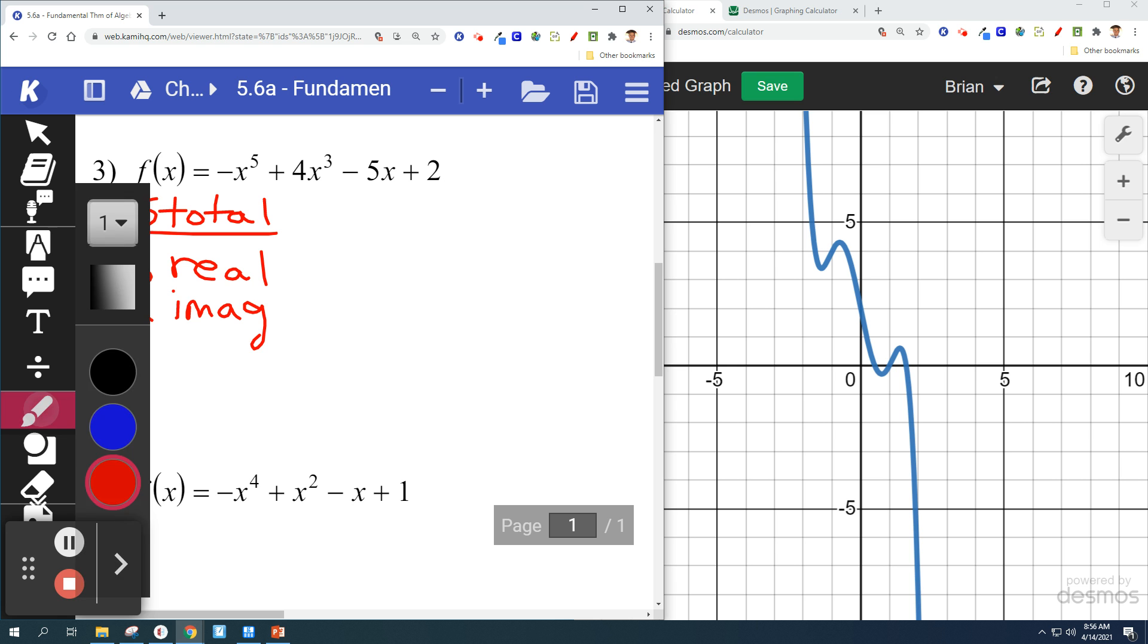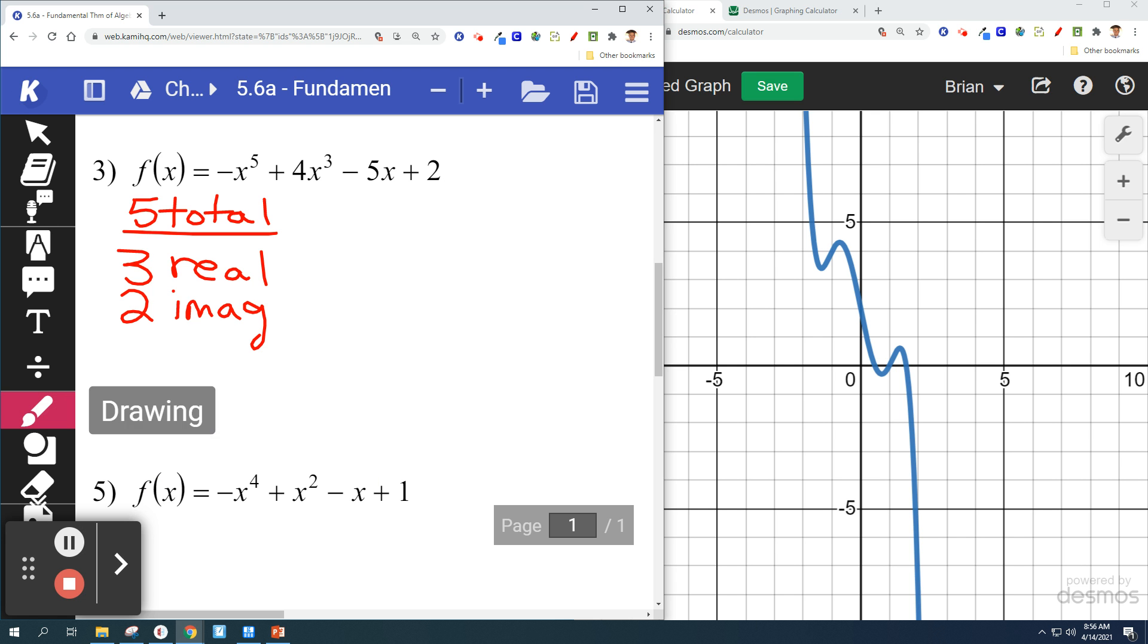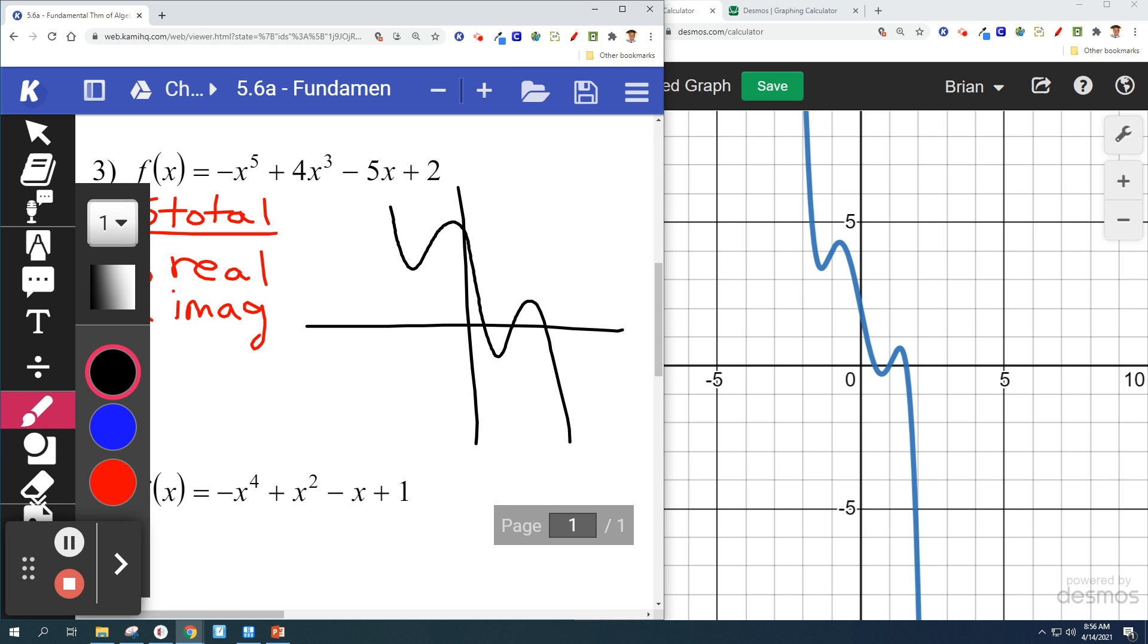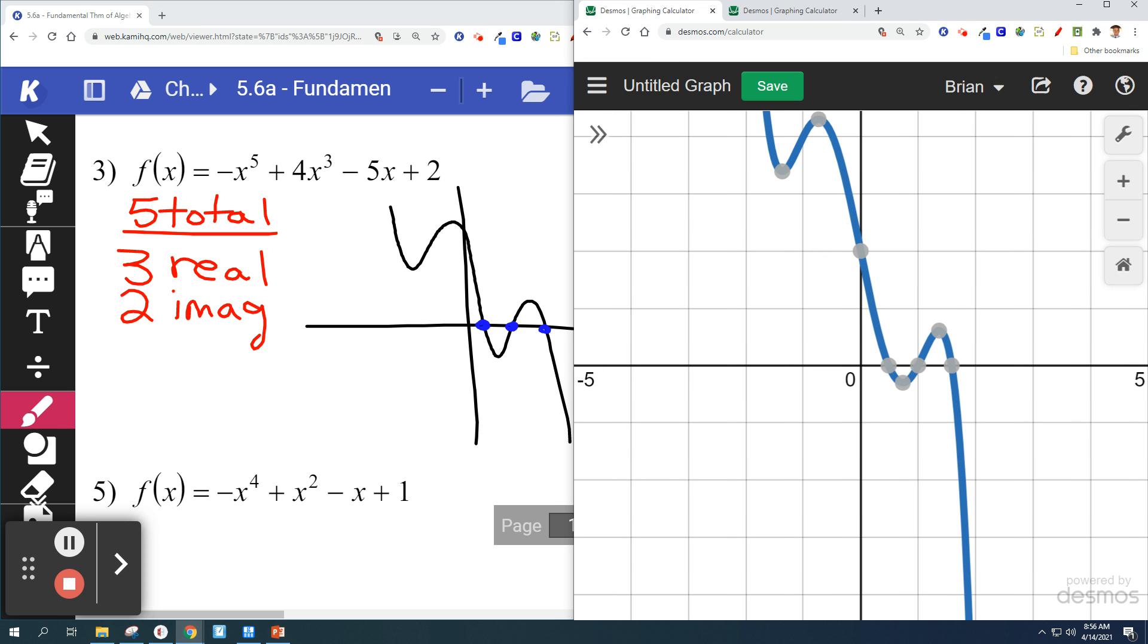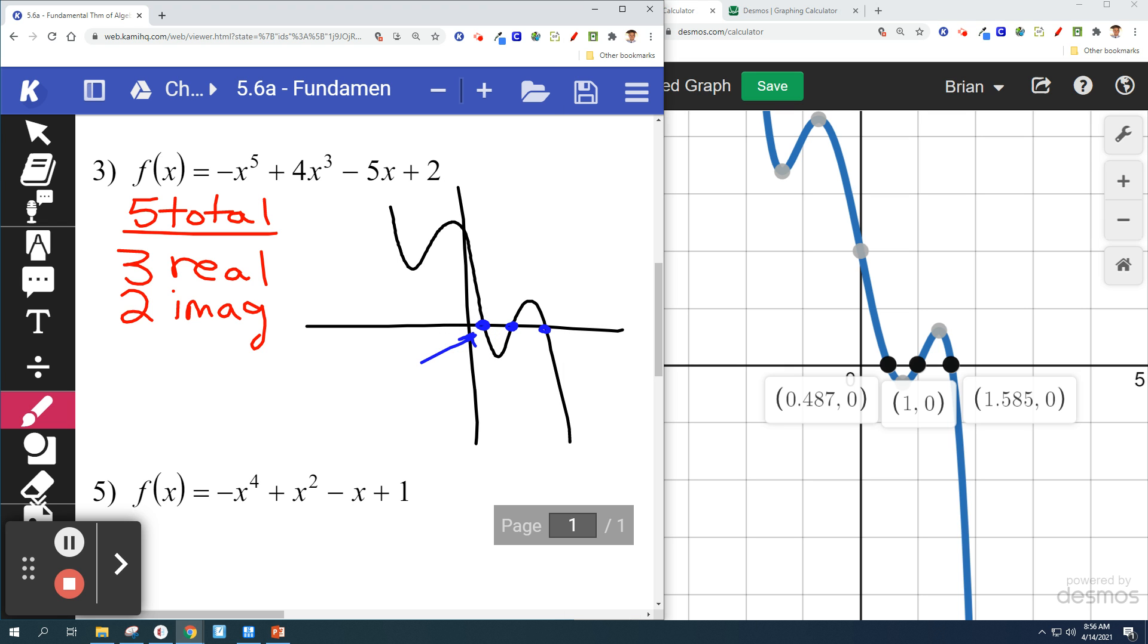That's the total. So quick sketch looks something like this. And label those things. It might help to zoom in a little bit. I see 0.487, 1.585. And really, that's it. That's the whole lesson, pretty much.